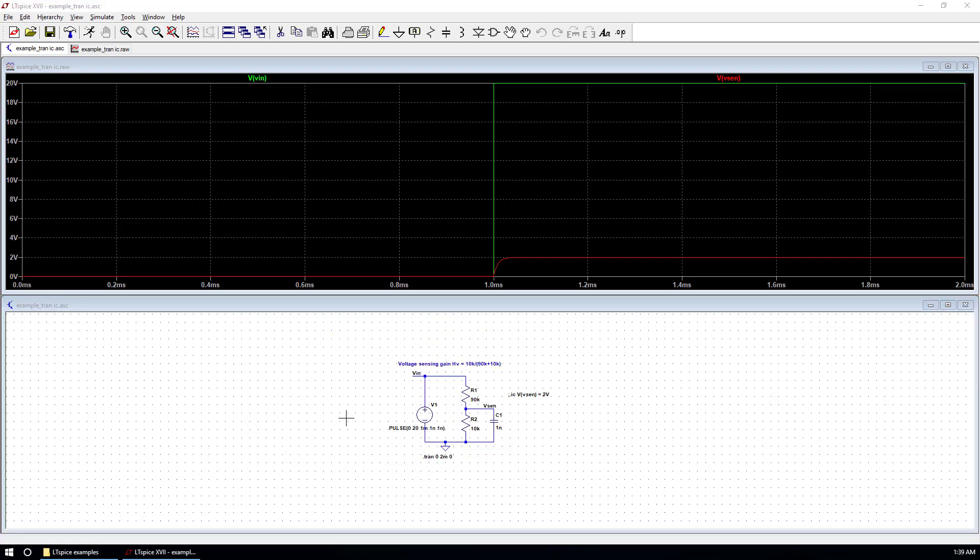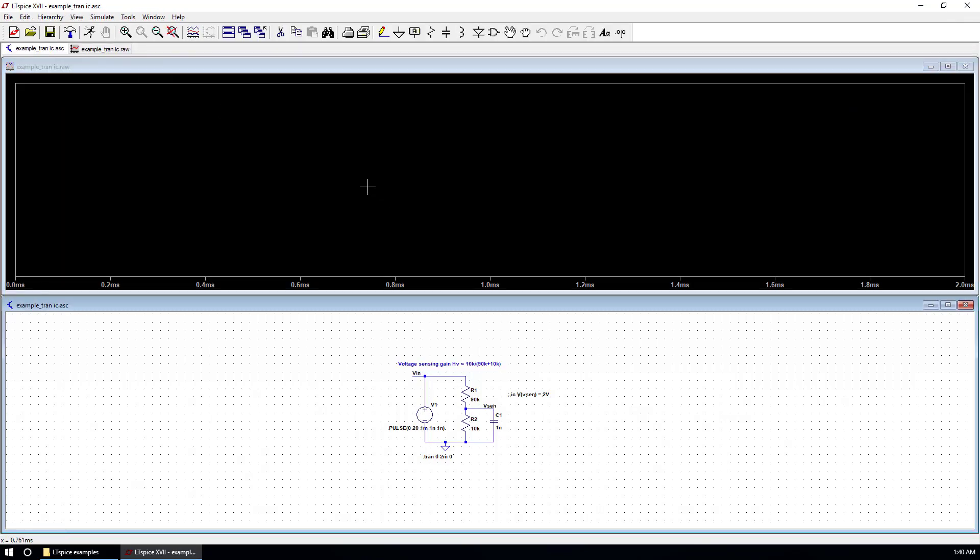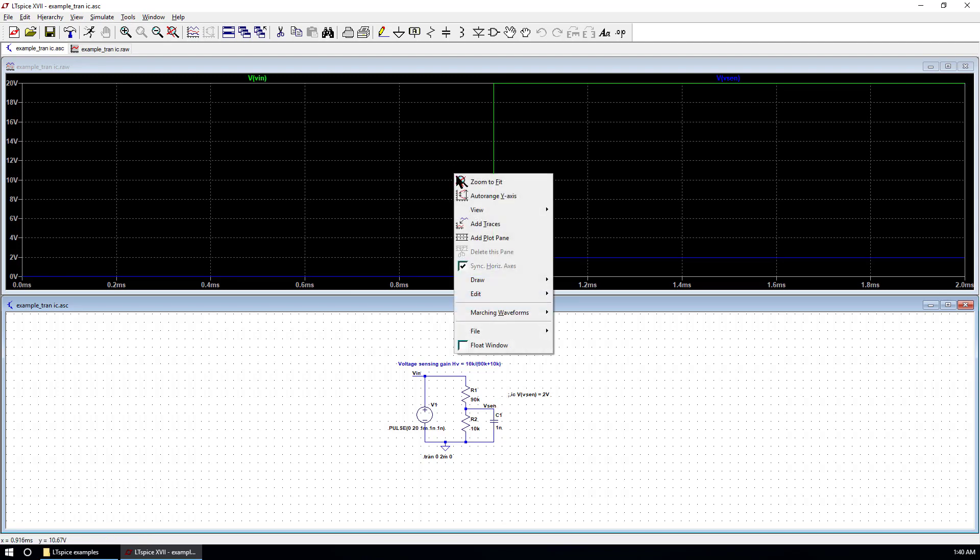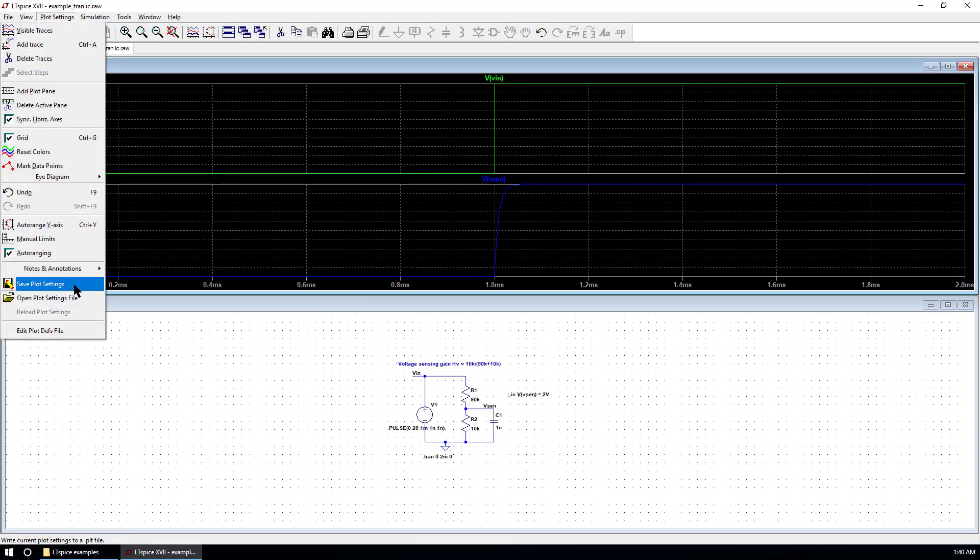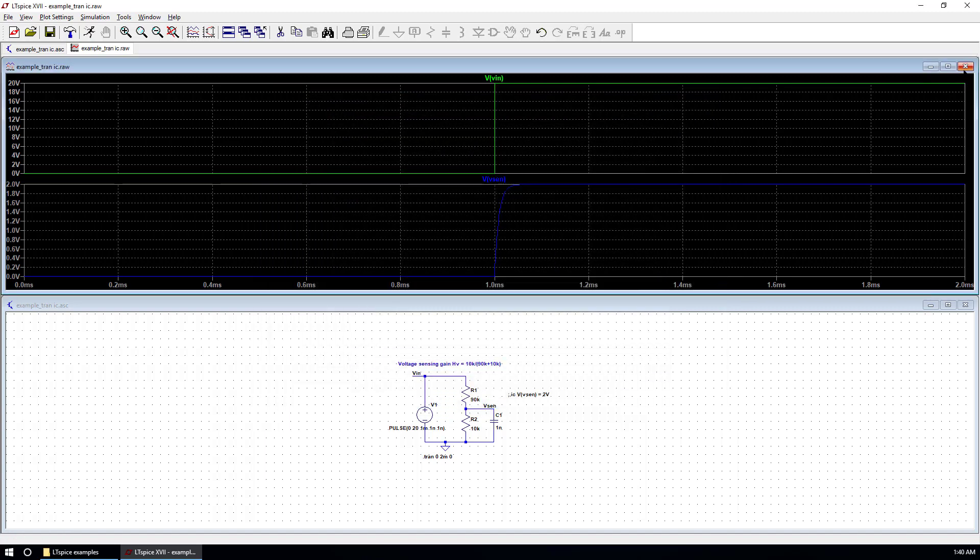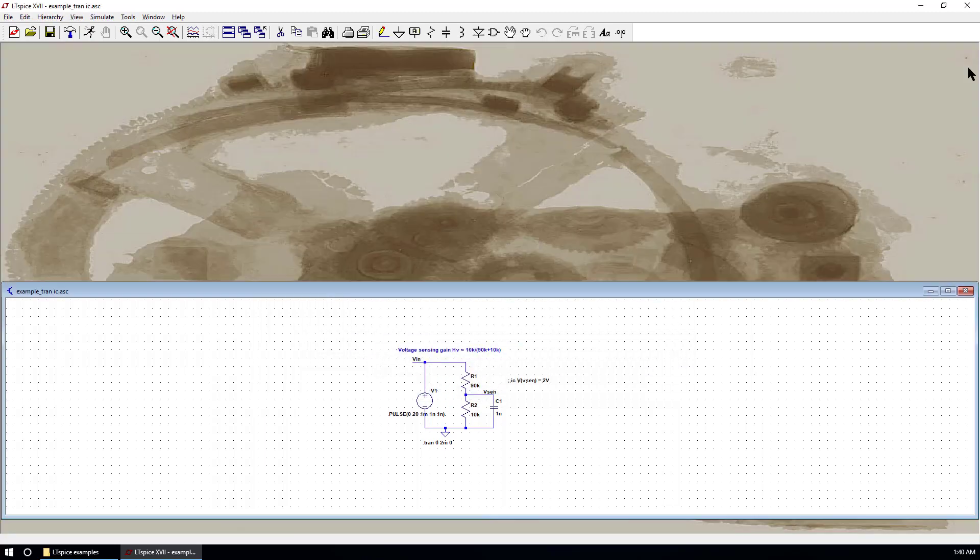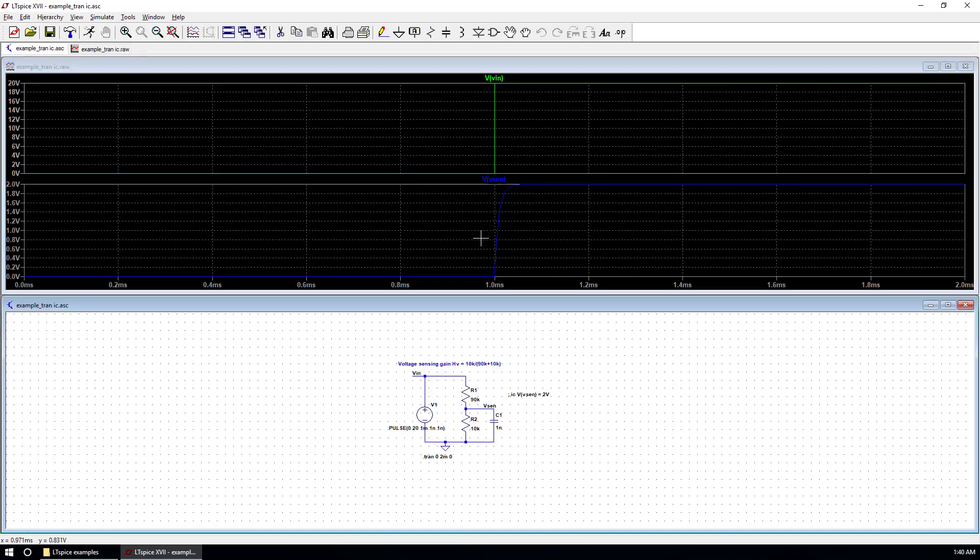Another trick I want to show you is how to save the plot setup. If you close the plot and run the simulation, there will be nothing shown here as before, because we haven't saved the setup yet. And we put V in, V sense back on, and add another plot pane. So now we go to plot settings. We can save plot settings in your local directory. So even you close this plot, next time you run a simulation, these settings will be loaded automatically.